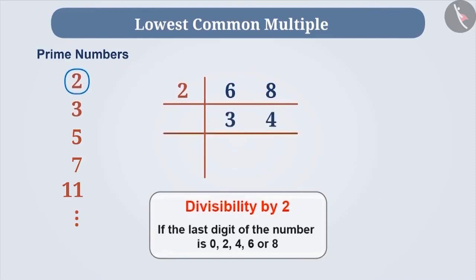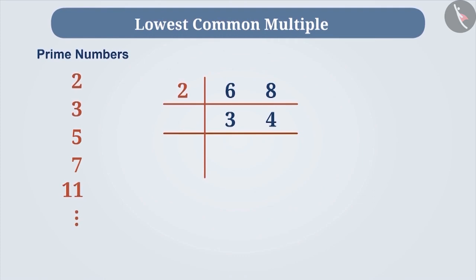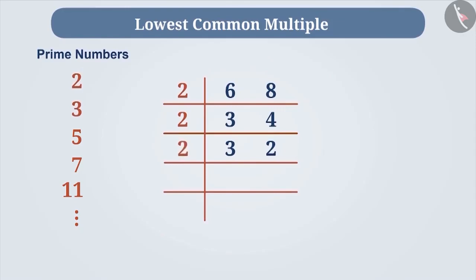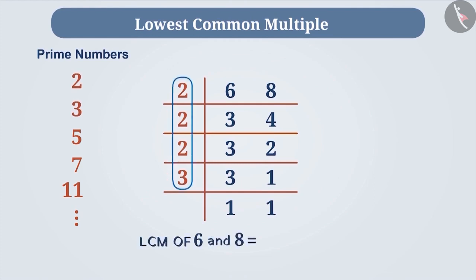Similarly, we find the smallest prime number which will divide at least one among 3 and 4. 2 is the smallest prime number. Since 3 is not divisible by 2, we write it in the next row as it is. Dividing 4 by 2, the result is written in the next row. We then divide 2 by 2 and write down the result, carrying 3 to the next row as it is. Now we divide 3 by 3. The method has come to an end. To find the LCM of 6 and 8, we multiply these numbers. Therefore, the LCM is 24.